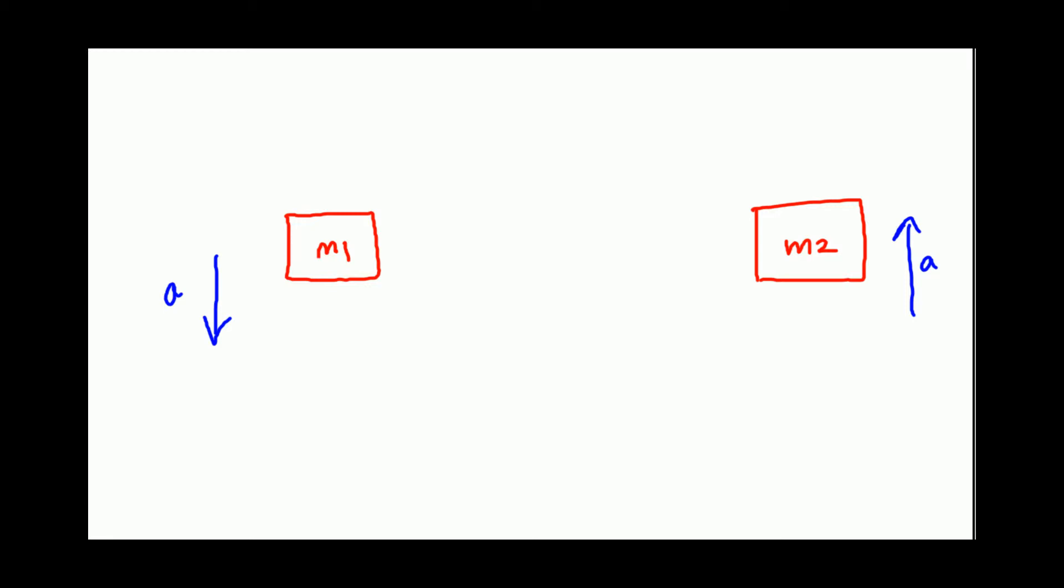So if M1 is accelerating down, force acting down has to be greater than force acting up. Force acting down is the gravitational force, correct? So gravitational force on M1 is M1G. The force up is the tension.